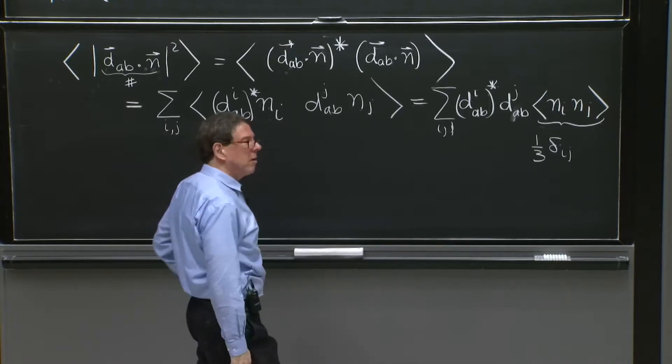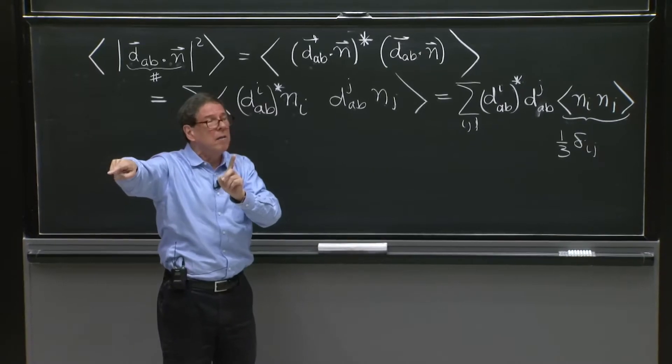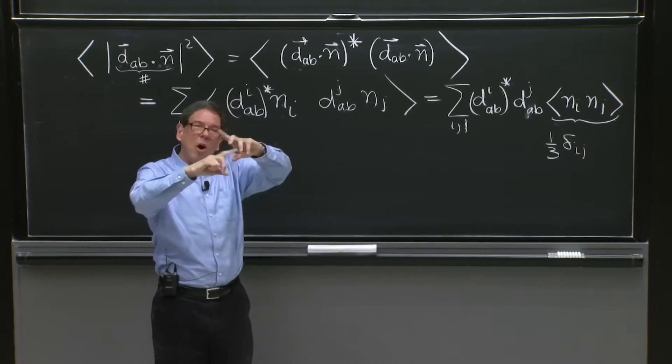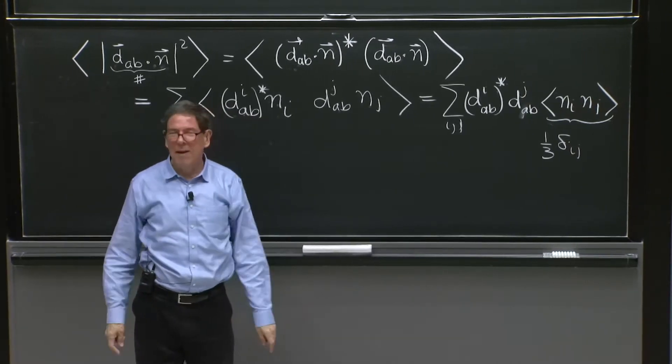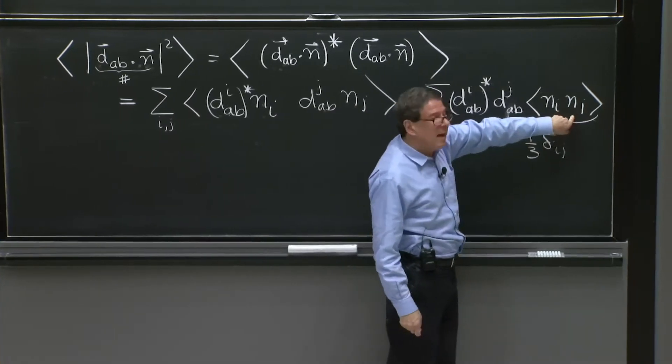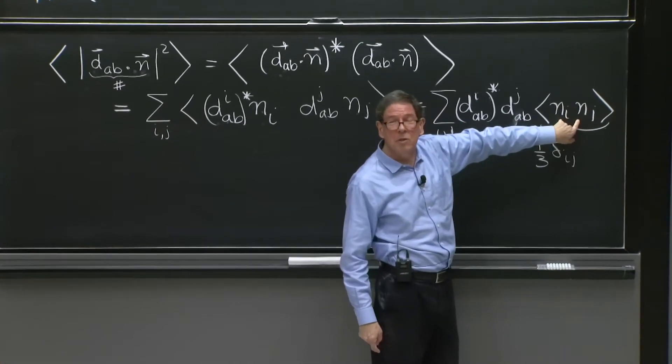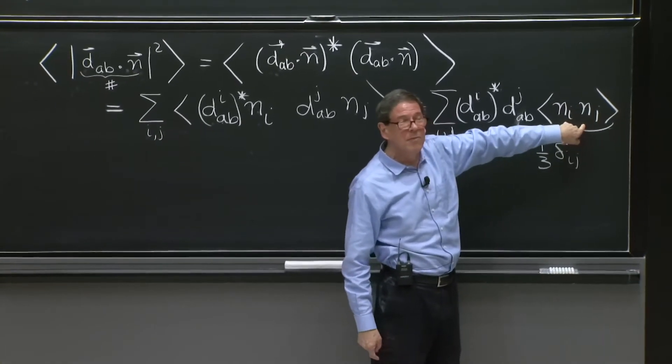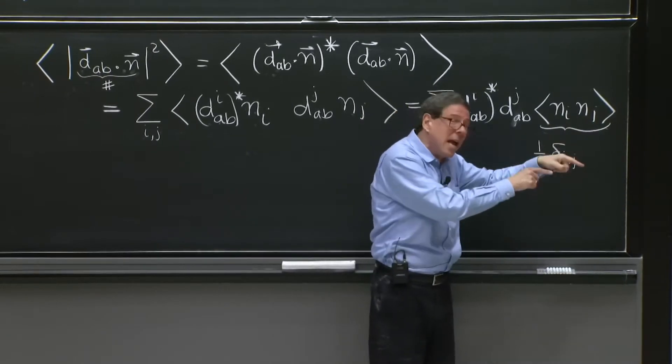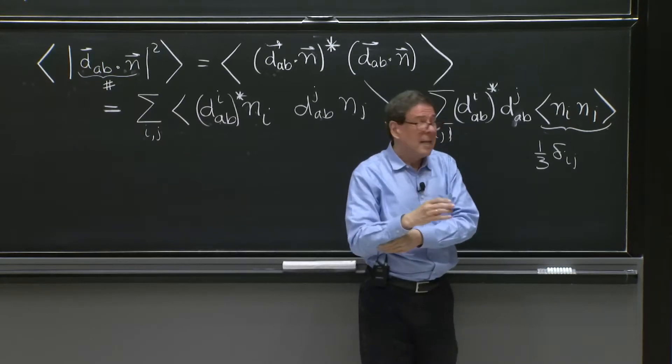I claim this thing is 1 third delta i j. And it's based on the following idea, that the average between n_x and n_y, by the time you integrate over the sphere, is 0. The average of off-diagonal things don't have averages. n_x with n_x, however, would have an average, because it's always positive. n_y with n_y would have an average, because it's always positive. And n_z with n_z would have an average. And each one of these three would be the same, because there's no real difference between the x, y, and z directions.